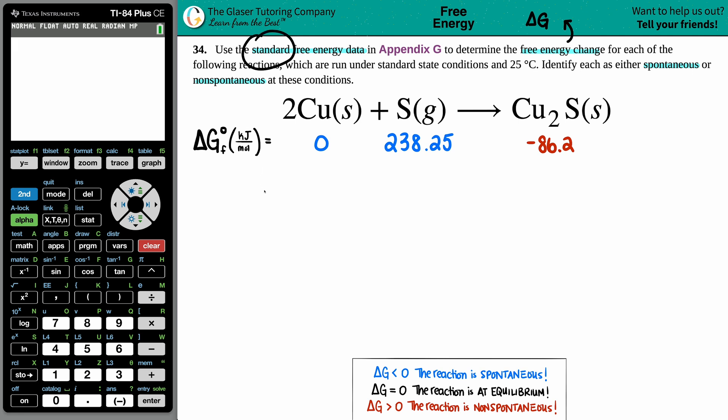Since we're using standard data from the back of a textbook, we're solving for delta G naught. This naught means it's always standard numbers in the back of a textbook. So I had to go to Appendix G. Copper solid would be zero, sulfur gas would be 238.25, and the Cu₂S is negative 86.2.